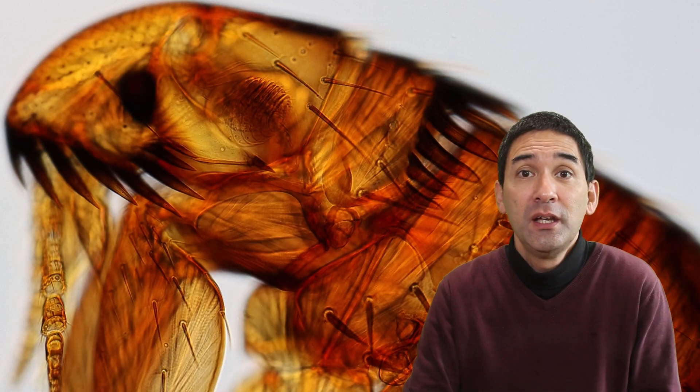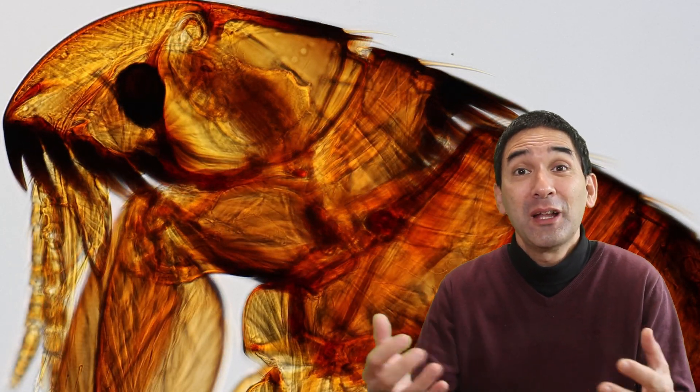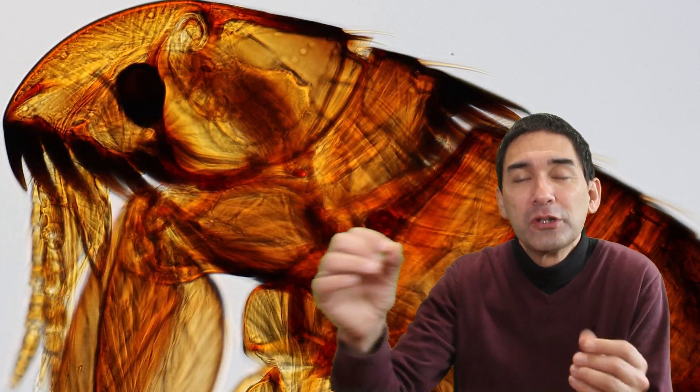For many years scientists did not know the mechanism that allows fleas to jump this far. There are actually several biological adaptations and under the microscope we are able to see some of these adaptations. That's actually one of the things I'd like to show you in this video. How are the fleas adapted to jump those large distances?